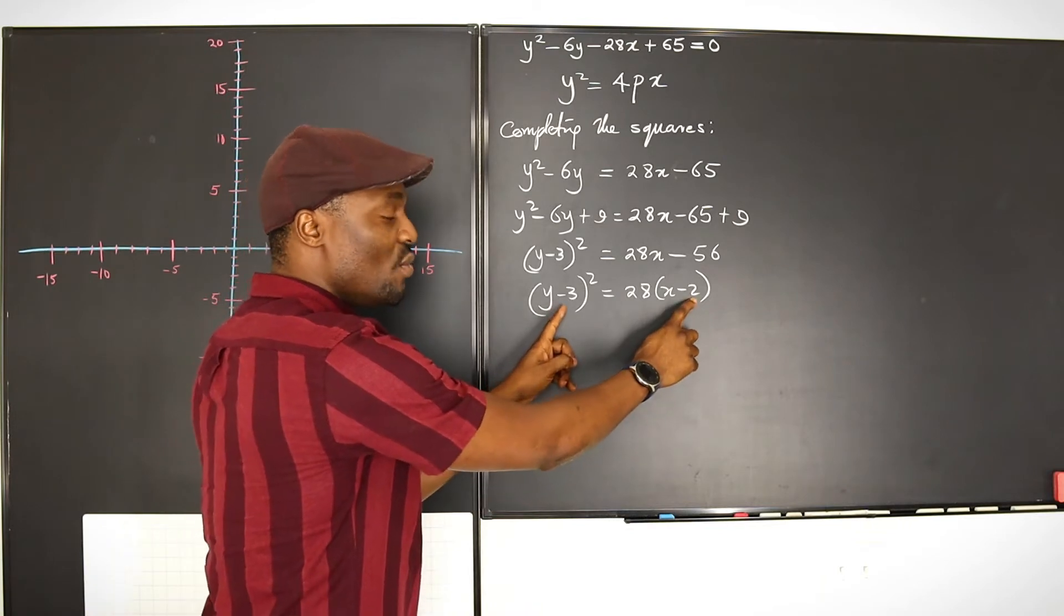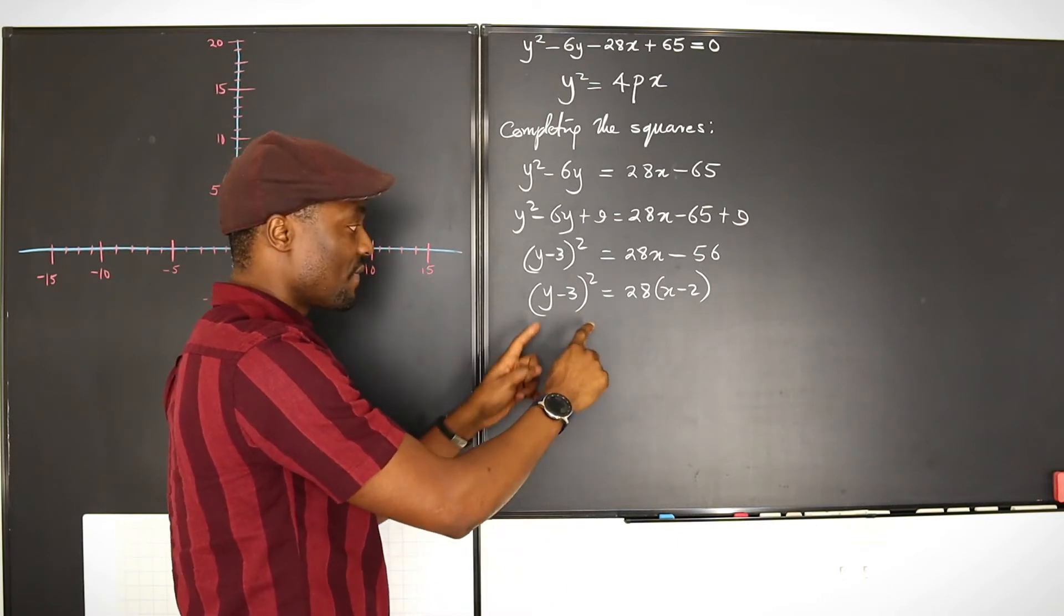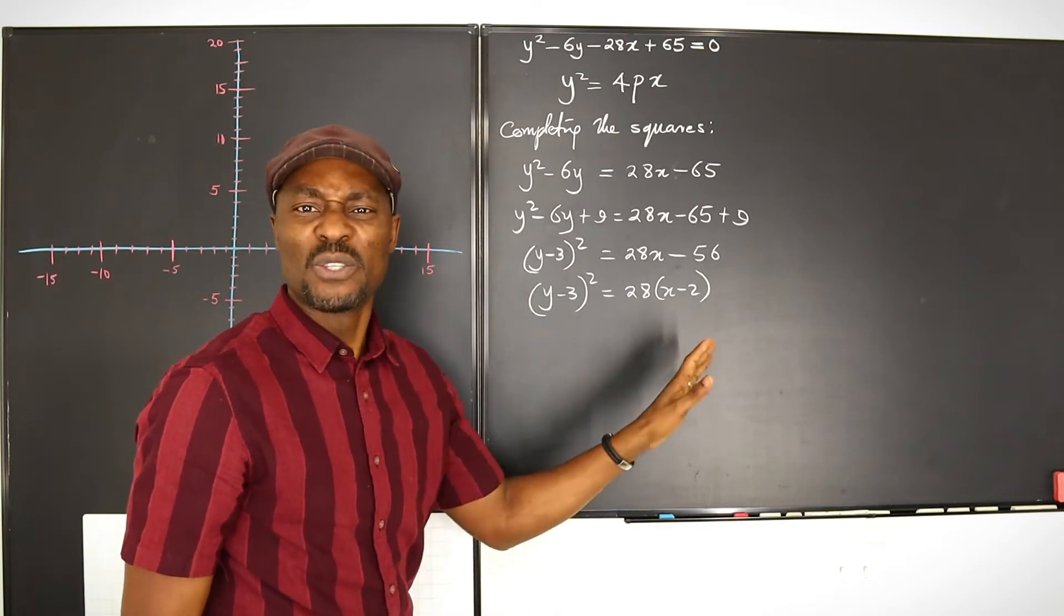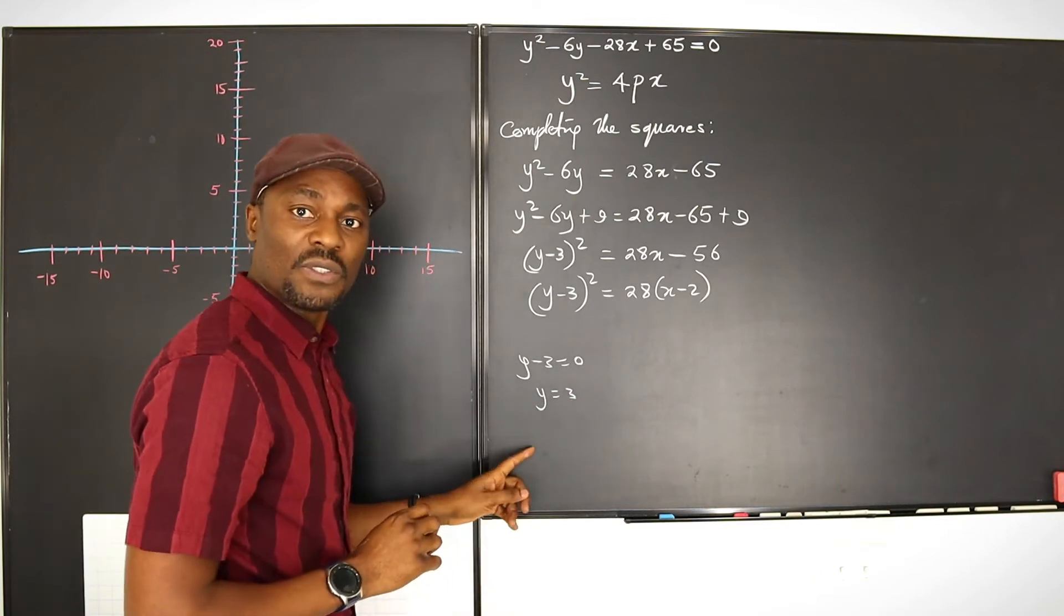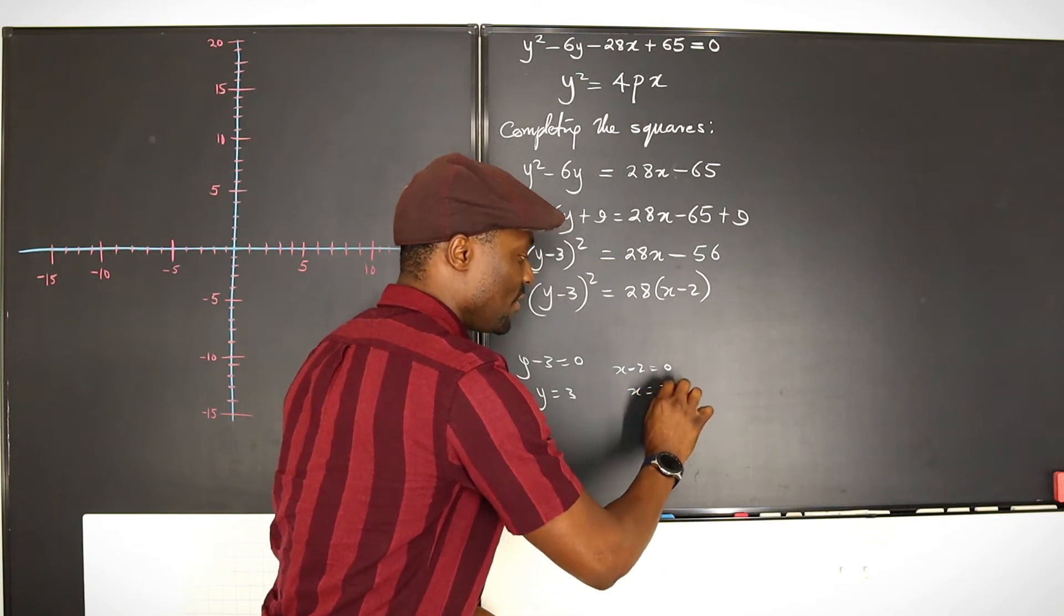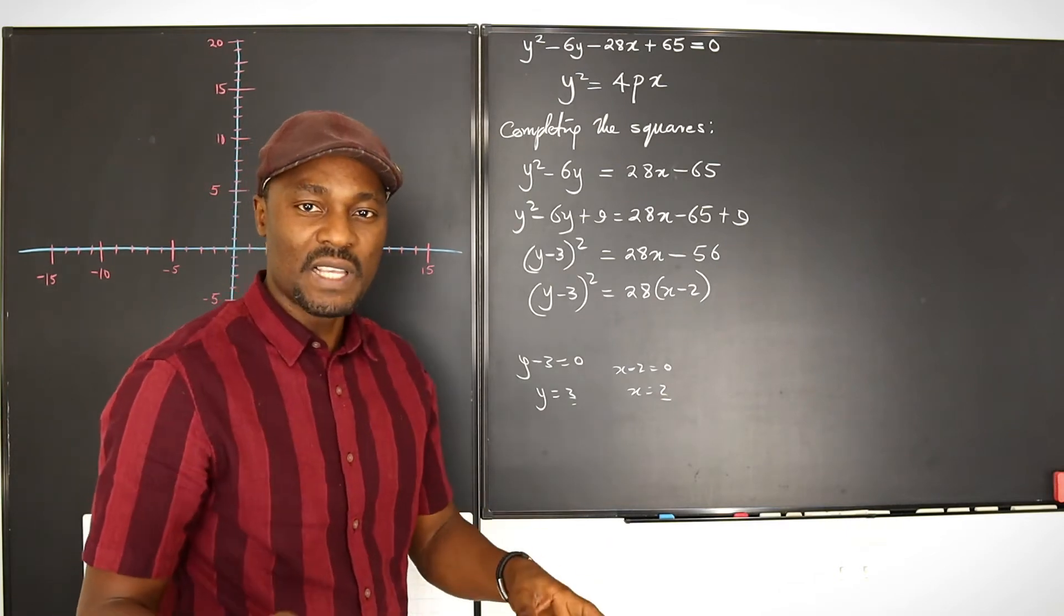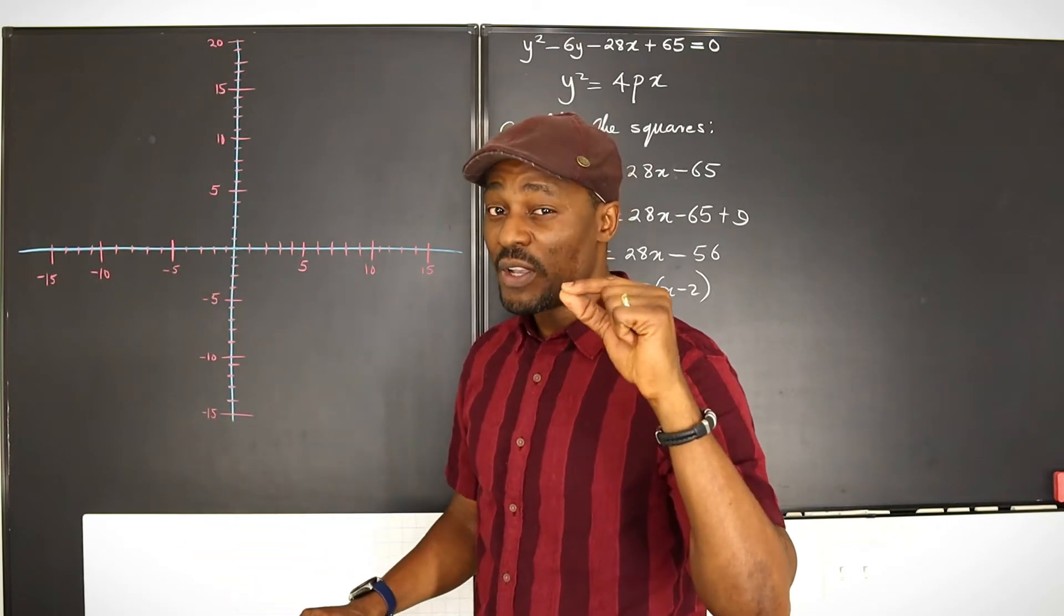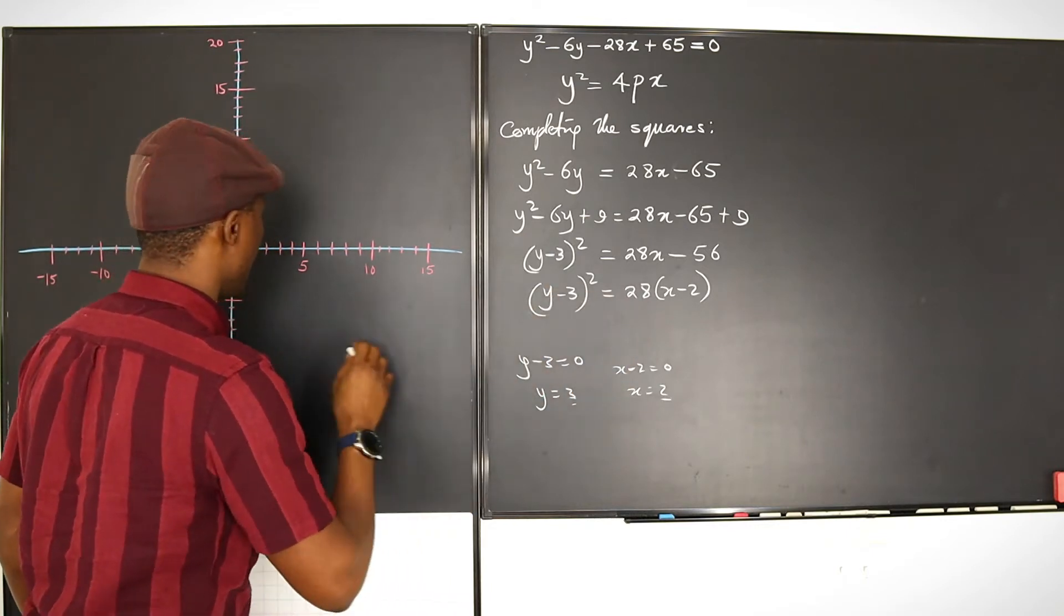Now the points have moved. This one has moved 3 to the right. If you don't know if it went to the right or not, just write y minus 3 equals 0, you get y equals 3. And this one too, write x minus 2 equals 0, x equals 2. So you know that x is going to be 2 and y is going to be 3 at the vertex. Let's go identify the new vertex. So it's not the origin now. It's at the point 2, 3.